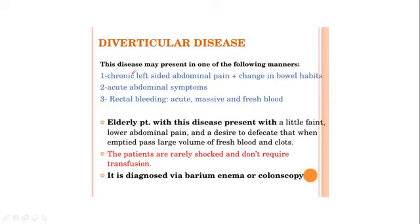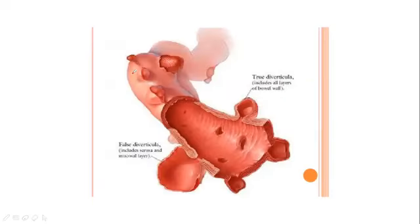Diverticular disease may present in the following ways: chronic left-sided abdominal pain, change in bowel habits, acute abdominal symptoms, rectal bleeding with acute massive fresh blood. The elderly patient presents with little pain, lower abdominal discomfort, urgency to defecate, and large volume of fresh blood per rectum. Patients are rarely shocked and rarely require transfusion. This is diagnosed by barium enema or colonoscopy. Diverticula are outpouchings of the colonic wall — false diverticula include only the mucosal layer, while true diverticula cover all three layers of the colon wall.